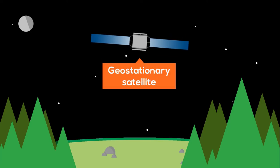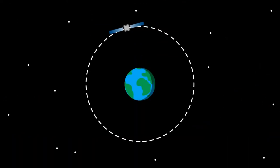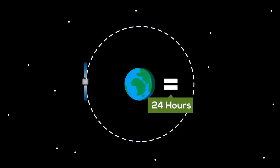In this video, we'll be talking about geostationary satellites. Geostationary satellites are satellites with an orbital period equal to that of Earth's rotation, which is 24 hours.